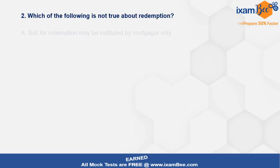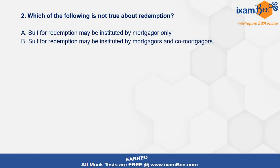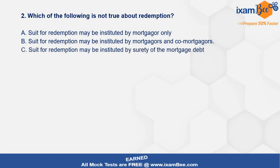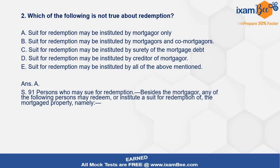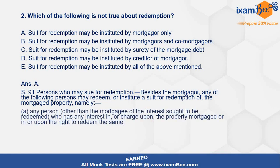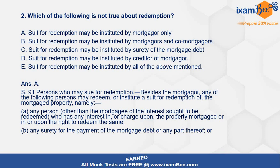Question 2: Which of the following is not true about redemption? Options: A) Suit for redemption may be instituted by mortgager only; B) Suit for redemption may be instituted by mortgagers and co-mortgagers; C) May be instituted by surety of the mortgage debt; D) Suit for redemption may be instituted by creditor of the mortgager; E) Suit for redemption may be instituted by all of the above. Since we already discussed the related provision, this becomes easier. The correct option is A — suit for redemption may be instituted by mortgager only — this is NOT true, because other people can also sue for redemption. Remember, don't be in a hurry when the question asks 'which is not true.'